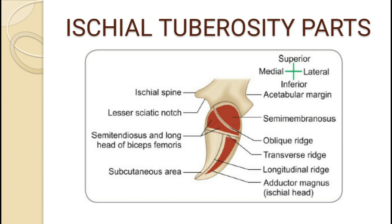Before going into the topic, we should know the divisions of the ischial tuberosity. The ischial tuberosity is divided by a transverse ridge into an upper and lower area. The upper area is again subdivided by an oblique ridge into superolateral and inferomedial areas. The lower area is subdivided by a longitudinal ridge into an inferomedial and inferolateral area.